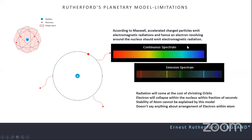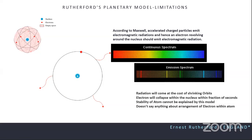The nucleus has a diameter of 10⁻¹⁵ meters while the atom has a diameter of 10⁻¹⁰ meters — the rest is empty space, explaining why alpha particles could pass through. However, Rutherford's model had limitations: according to Maxwell's classical physics, an accelerating charged particle emits electromagnetic radiation, so the electron should continuously lose energy, spiral inward, and fall into the nucleus. Additionally, the model predicted a continuous energy spectrum, whereas atoms actually produce a discrete energy spectrum.